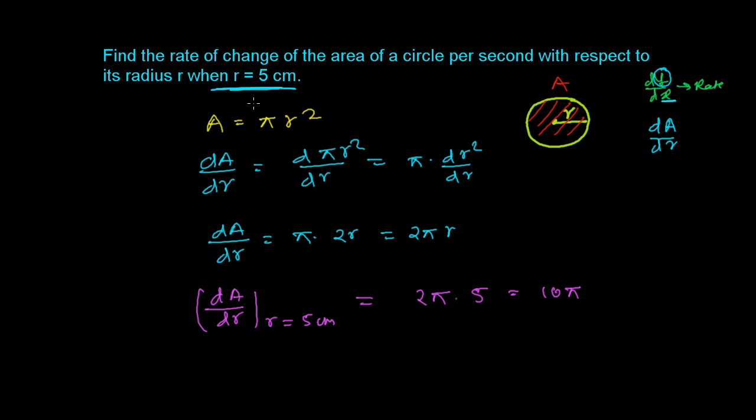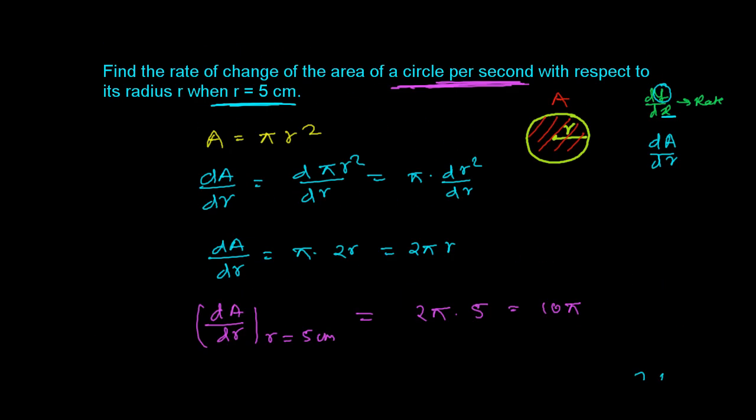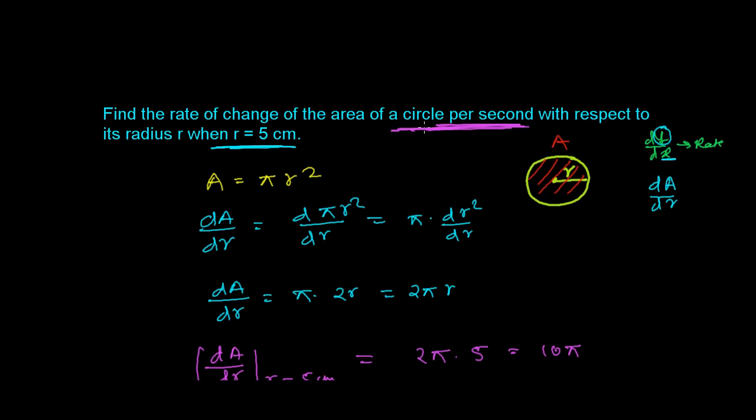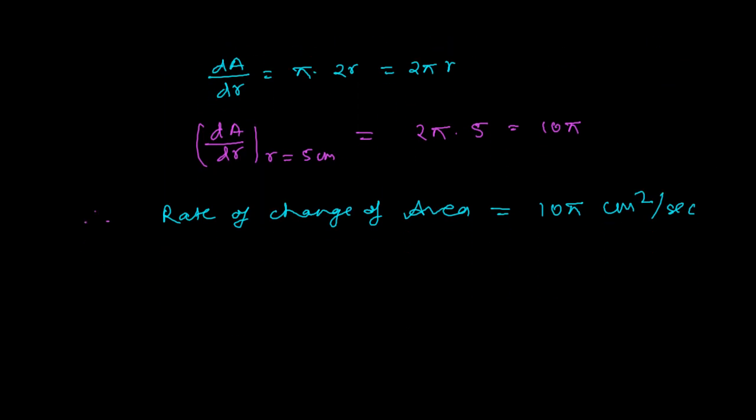So according to the question, the rate of change of the area of the circle per second, so simply I'll write, therefore, rate of change of area equals 10π. Since it is area, so it will be centimeter square per second. The question was saying we need to find out the circle's area per second. So we find out the area, and here see, the radius is a centimeter. So definitely the area will be centimeter square. So this is 10π centimeter square per second.